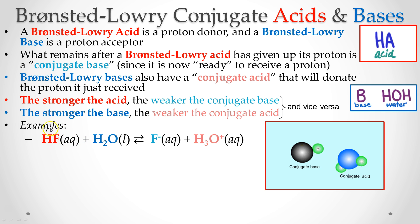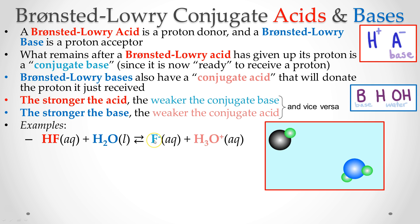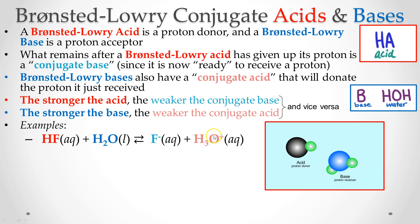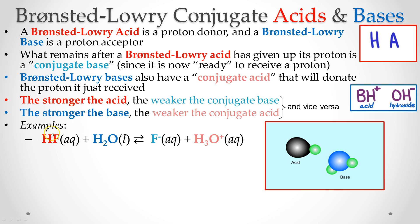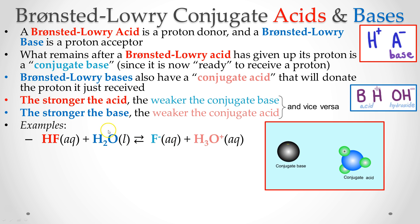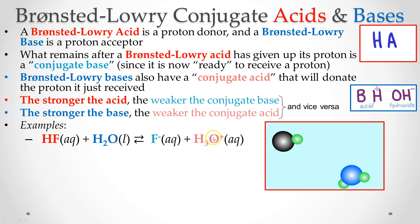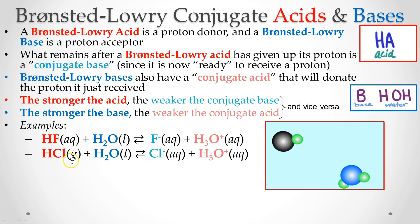Here's an example: hydrogen fluoride, or hydrofluoric acid, plus water produces the fluoride anion and the hydronium cation. The hydrofluoric acid is my acid; what's left after that proton leaves is my conjugate base. Water in this case is the base, and what's left after it takes on that proton is called the conjugate acid.